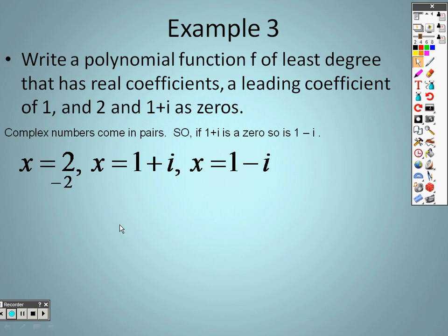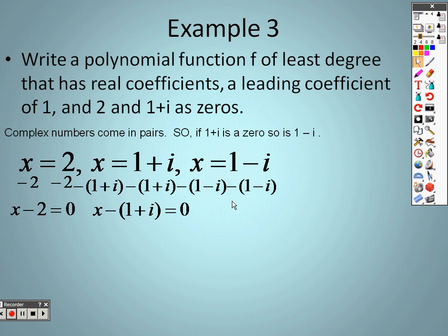So when I set this up, I solve them like before to find out what my factors are, which means I subtract 2 to get x-2=0. I'm going to subtract to get x-(1+i)=0. Then I'm going to subtract to get x-(1-i)=0.